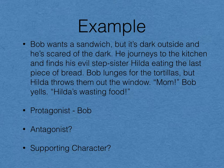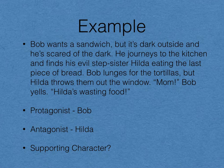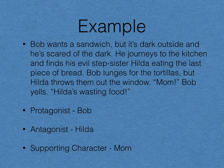Our antagonist is going to be Hilda — the character who's getting in Bob's way, standing between Bob and his delicious sandwich because she ate the bread and got rid of the tortillas. And then finally, our supporting character is Mom. We don't actually see her in the story and we don't know what she's going to do, but she's going to take up some space in this scene, and she is neither protagonist nor antagonist, which makes her a supporting character.